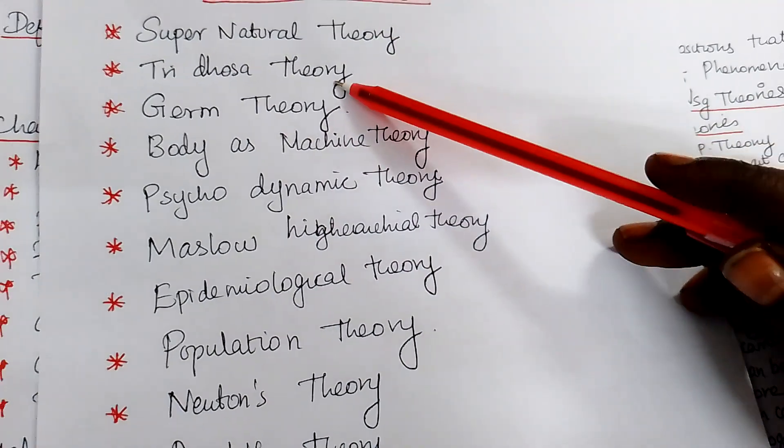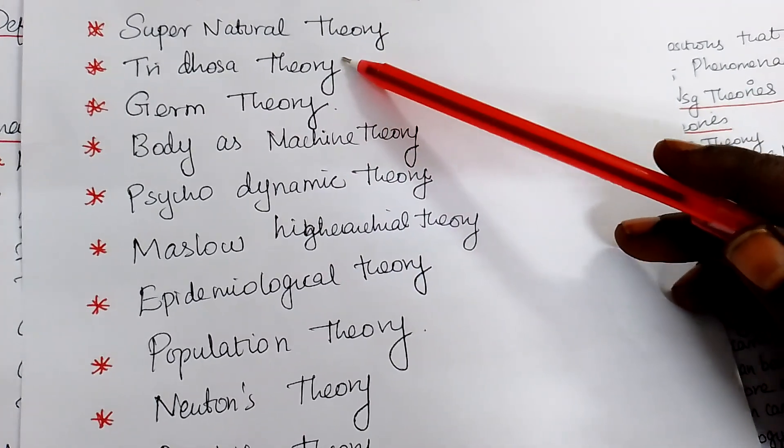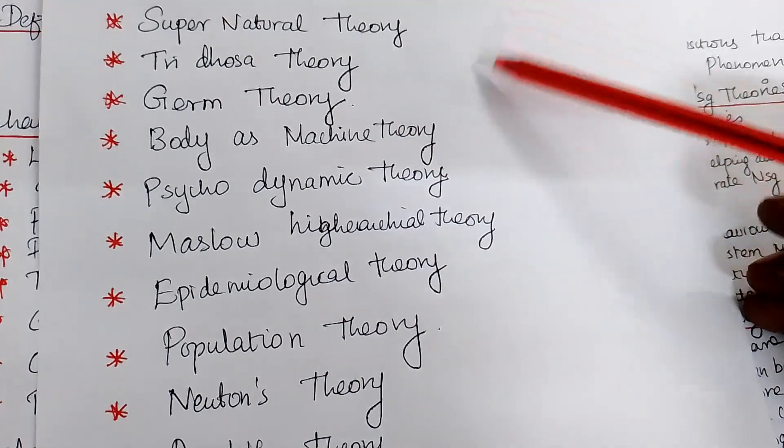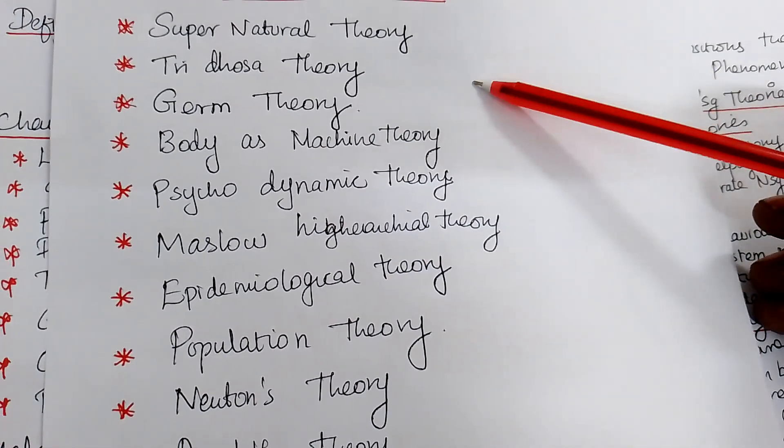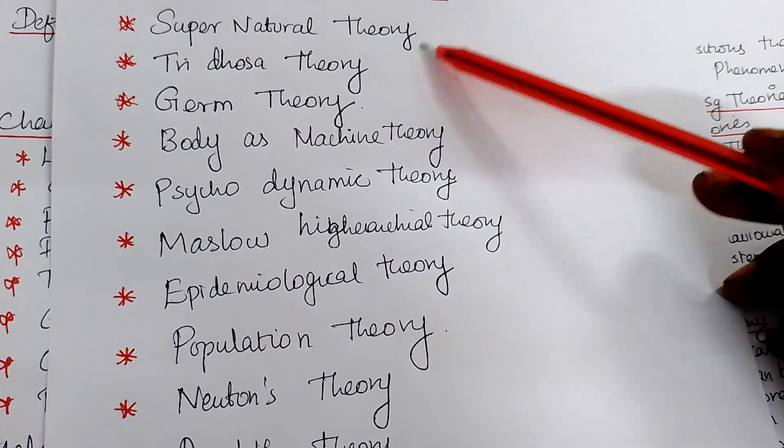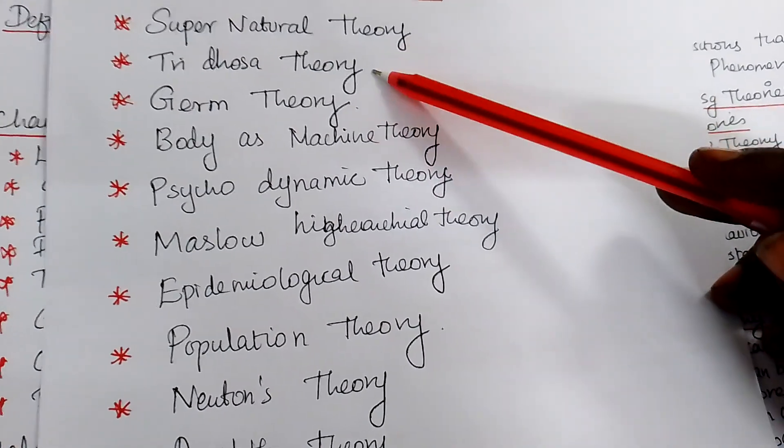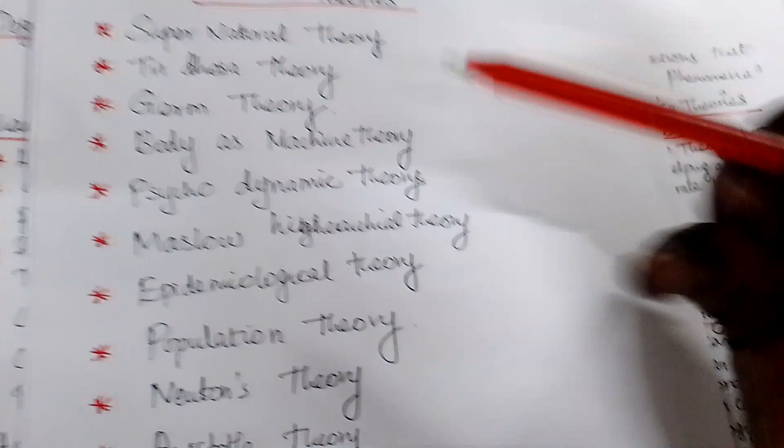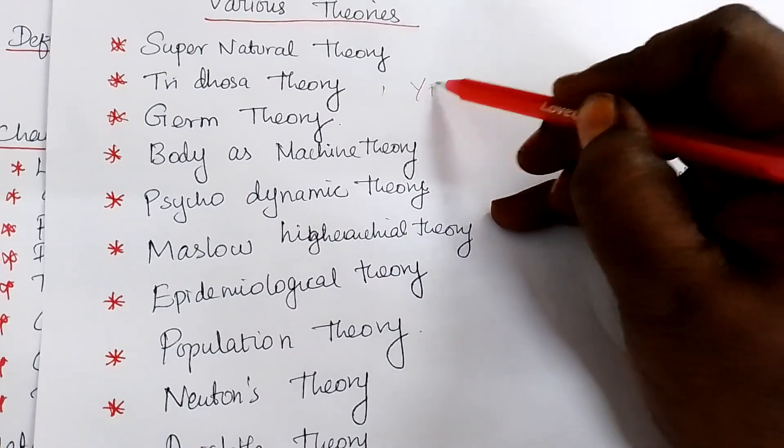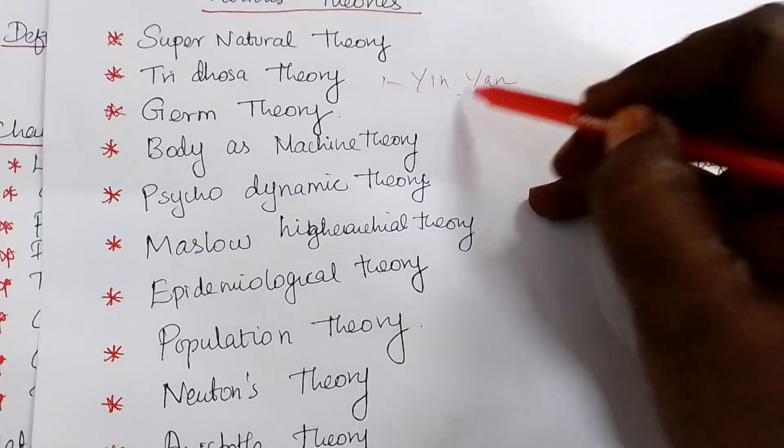After some time, three dosa theory. Vata, Pitta, Kapha. They told the three things are there. Vata, Pitta, Kapha. There is an imbalance from the humoral mechanism. You will get a disease. And you can tell this yin-yang theory also. Yin-yang. Yin-yang theory.